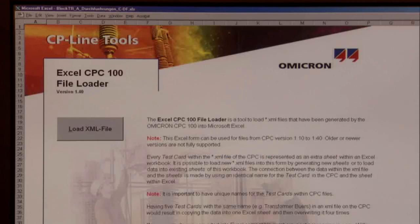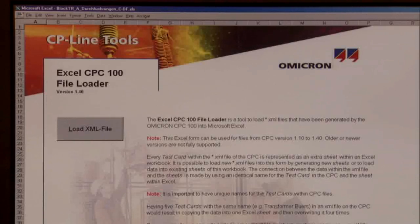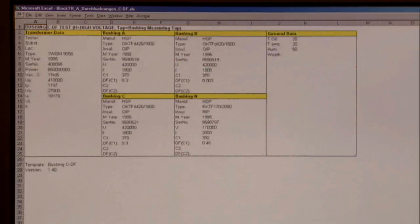The Omicron Excel file loader provides graphical representation of the data in Microsoft Excel. In the overview, we see the transformer data on the left, and beside it, the technical data of the bushings for the three phases and of the neutral conductor.